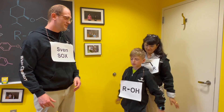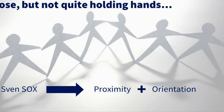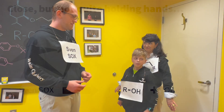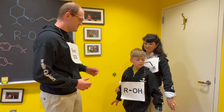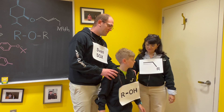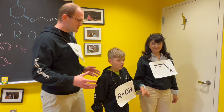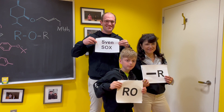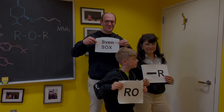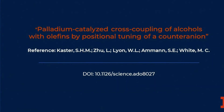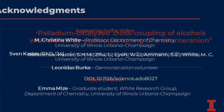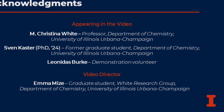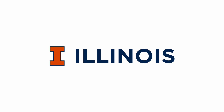This puts us close, but it's harder to connect our hands. Another thing that SvenSOX is doing is called orientation. SvenSOX is taking the alcohol and the olefin and putting them in the correct orientation in order for them to more easily hold hands. Thank you all.